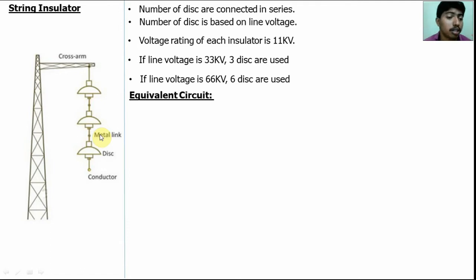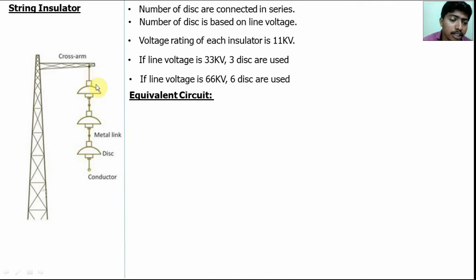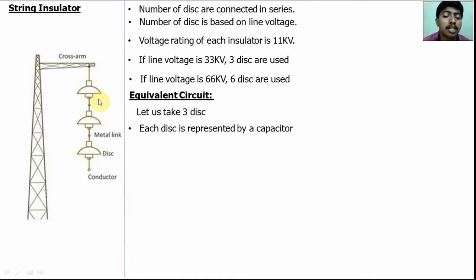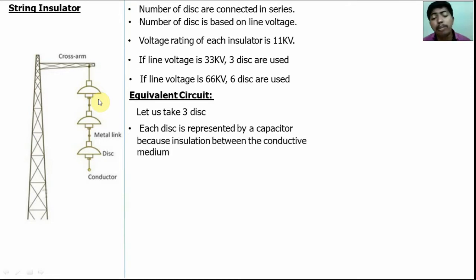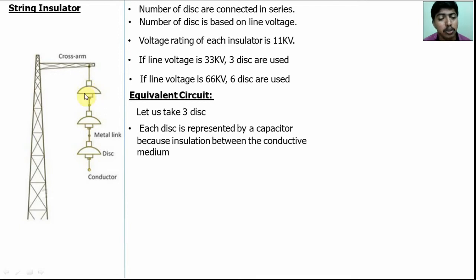Efficiency calculations are very important for insulators. For the calculation of efficiency, the equivalent circuit is important. The disk represents the insulation medium and the metal link is the connecting medium. Since there is insulation between two conductive mediums, the disk is represented as a capacitor — this capacitor is called the self-capacitance.